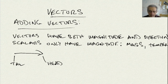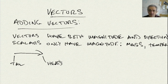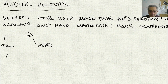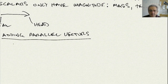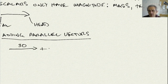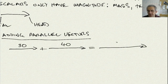So how do we add vectors that are parallel? Adding parallel vectors — the way we would do this is very simple. It's basically just arithmetic addition. If we have a vector that is 30, plus a vector that is 40, we end up with a vector that is 70. 30 plus 40 is 70.